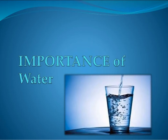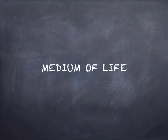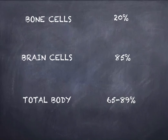First, if we talk about the human body, water is the most abundant component of the human body and it is also the main component of a cell and its cytoplasm — water as a medium of life. Its concentration varies from human to human; the main concentration is 65 to 89 percent. It also varies in different cells. Bone cells contain about 20 percent water, and brain cells contain 85 percent water.